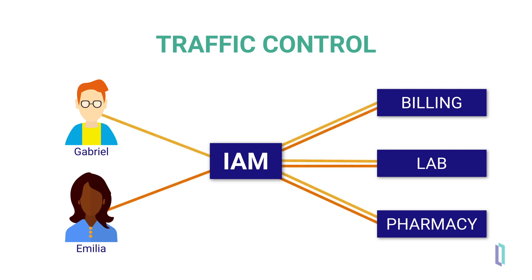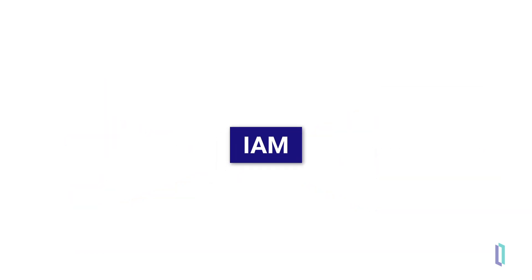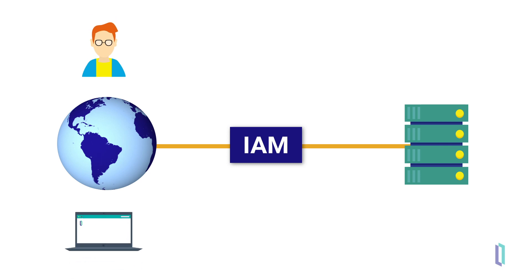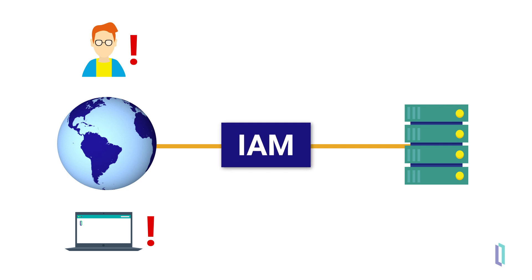Using IAM, you can control the traffic coming from these downstream developers or applications to your upstream exposed APIs. So maybe you limit Gabriel to 10 API calls per hour, or allow Amelia to only call the billing API. This functionality is especially important if you're exposing APIs to the outside world. When the audience includes developers and applications outside of your company, it introduces a potential vulnerability. IAM gives you control of this type of traffic, allowing you to protect against external risks.